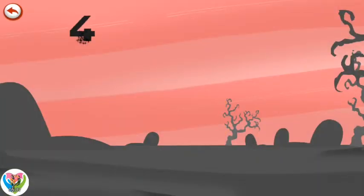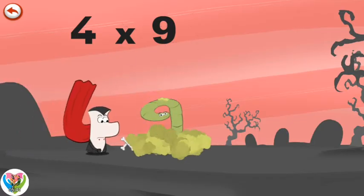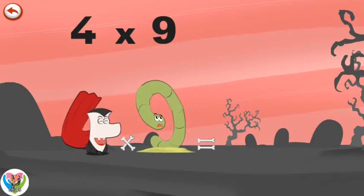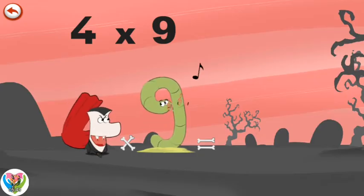What's the story of four times nine? When Vamp 4 sees Slimy Nine, he really wants to bite him. But Slimy Nine whistles to get the help of his friend the caterpillar.